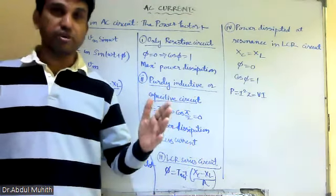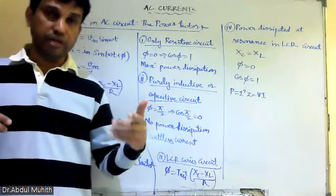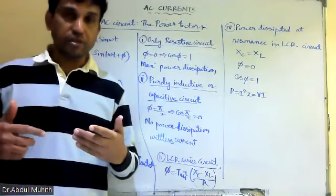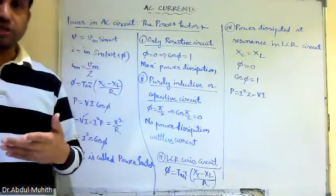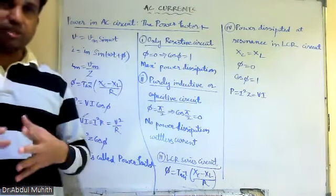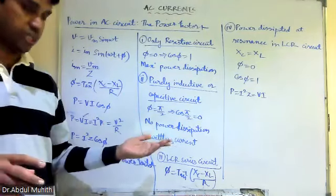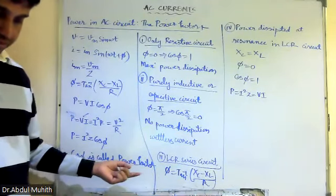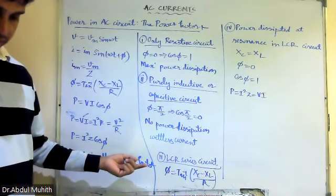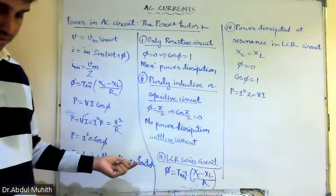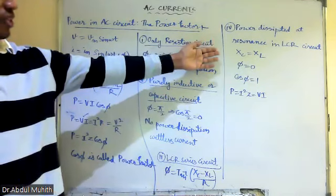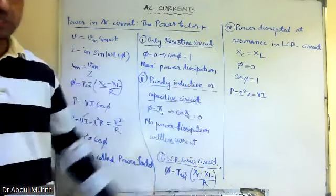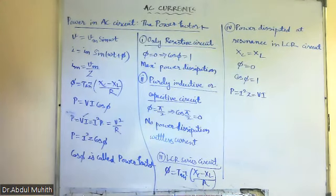In the old power meters, wattless current caused problems — people would switch off everything and leave on holiday, but when they returned the meter had recorded a high electricity bill due to wattless current. Modern systems have eliminated this issue. For an LCR series circuit at resonance, Xc = XL, so φ = 0 and cos φ = 1, giving P = I²Z, which also equals VI.